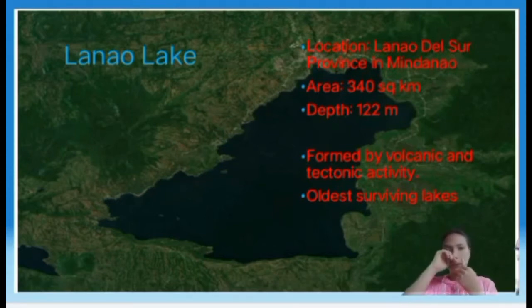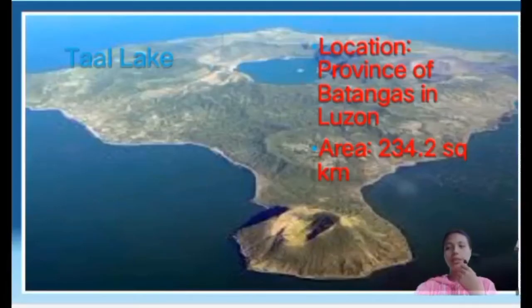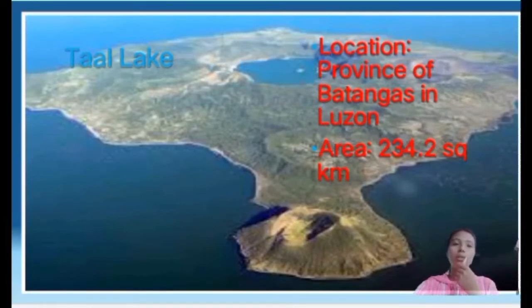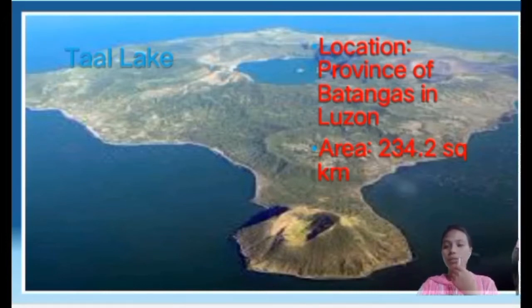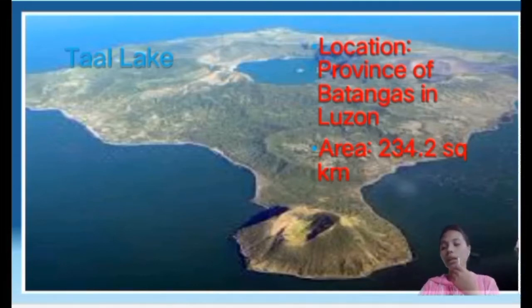The third largest lake in the Philippines is Taal Lake, found in Luzon, in the province of Batangas. It has an area of 234.2 square kilometers. Its waters fill a large caldera formed by volcanic eruptions, and it has a high sulfuric content due to its location in a volcanic region.